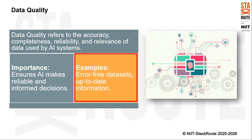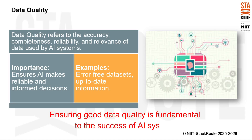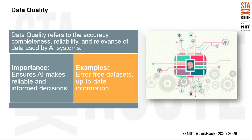For example, error-free datasets are essential — if there are mistakes in the data, AI might learn the wrong patterns or make incorrect predictions. Having up-to-date information is also critical, as outdated data might not reflect current trends or changes in the environment, leading to outdated decisions. Ensuring good data quality is fundamental to the success of AI systems, helping to make sure that AI operates effectively and makes reliable decisions based on accurate and relevant information.